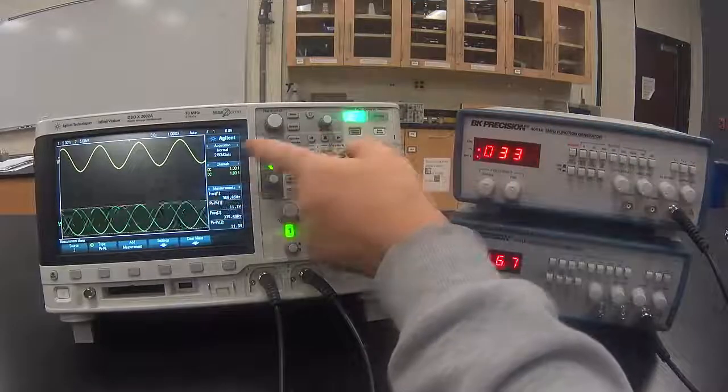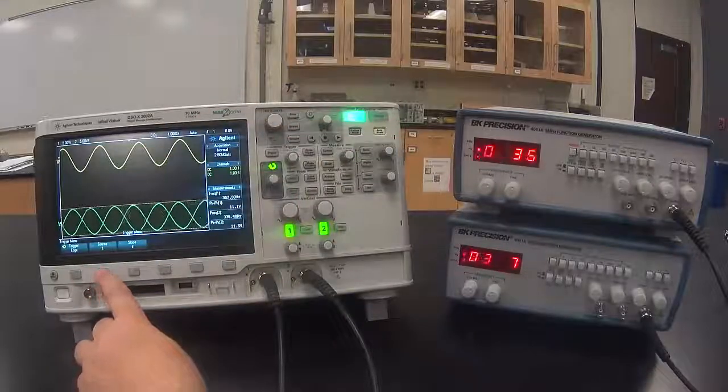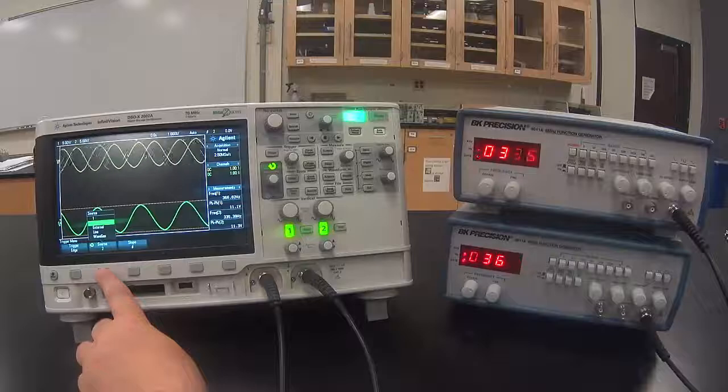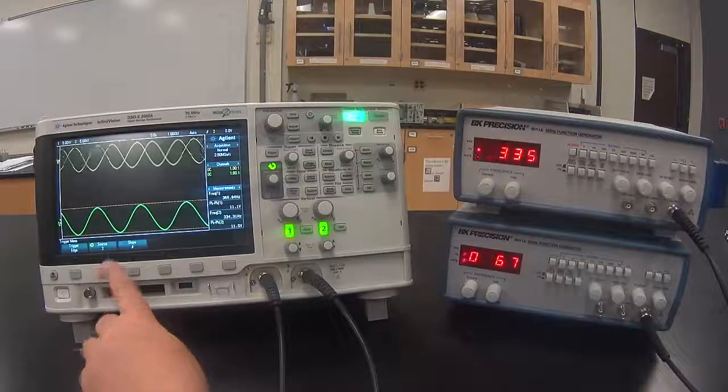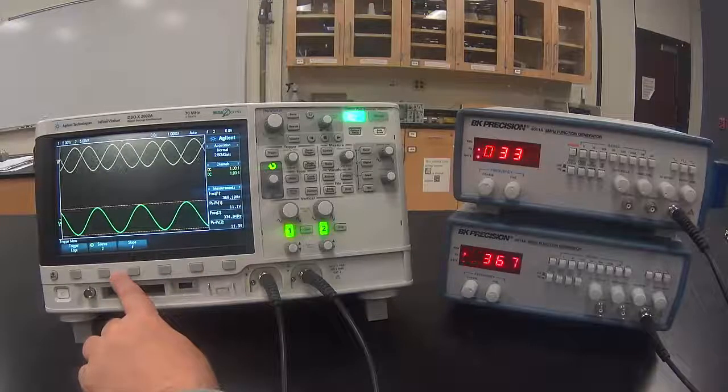If I want to make channel 2 stable, I can push the trigger button, then select source 2. And then the bottom one is stable, but the top one is not static.